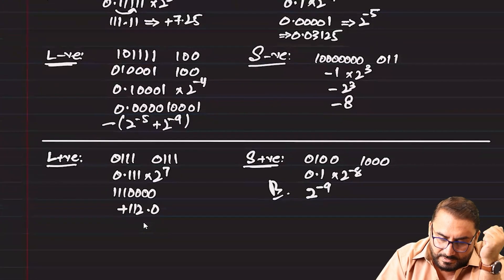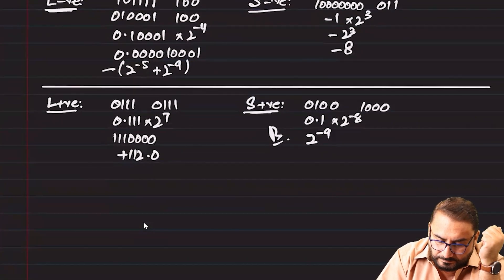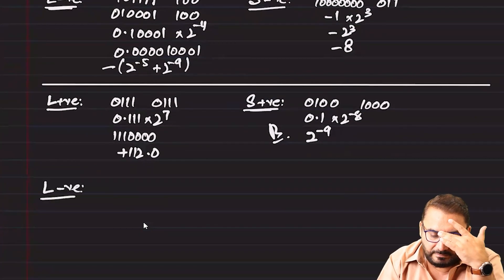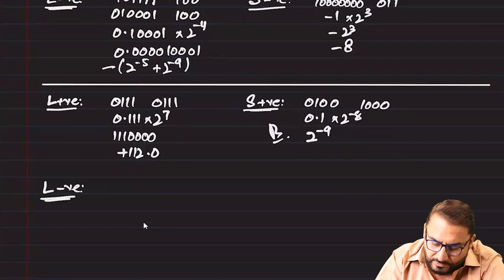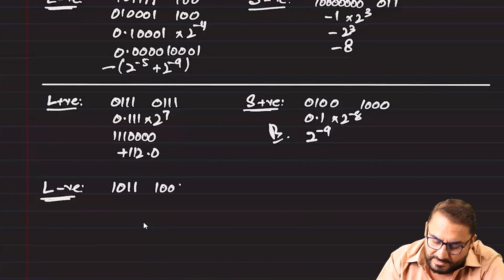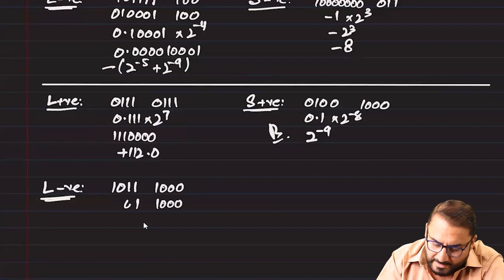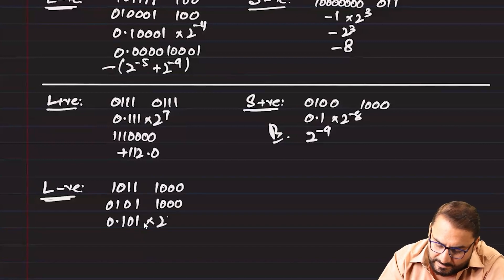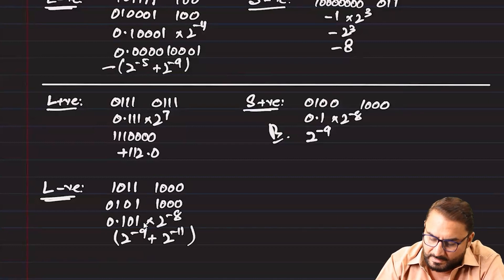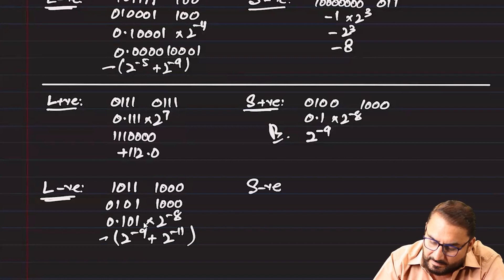For the largest negative number with 4-bit mantissa and 4-bit exponent: the mantissa is 1000 and exponent is 1000. Converting the negative mantissa to positive gives 0.101, then 0.101 × 2^(−8). This equals 2^(−9) + 2^(−11), and the whole thing is negative.